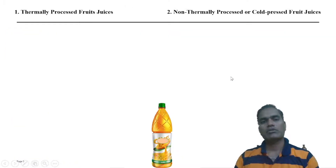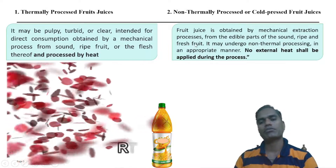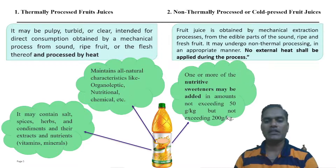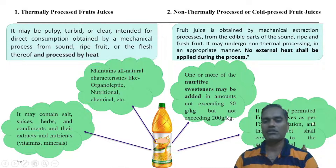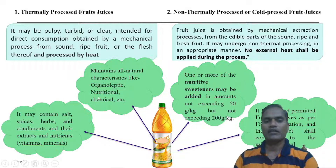You can see the difference between thermal processed and non-thermal processed fruit juice. The basic difference is that thermal processing applies heat treatment, while non-thermal means without any heat treatment — whatever the natural fruit juice, it is directly packed. In thermal processing fruit juices like RTS beverages, the Food Safety Standard Authority of India gives regulations permitting the addition of preservatives, ingredients like salt, spices, herbs, coloring and flavoring matters, or nutrients as required, to maintain the specific standard of the final product.